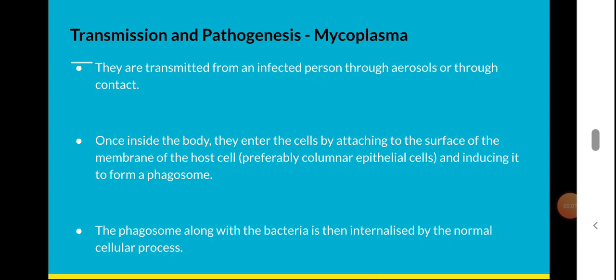In this session we will discuss the transmission and pathogenesis of mycoplasma. In the last session we discussed the cellular and structural features of mycoplasma, its taxonomic position, the different species which infect humans, and the infections caused by mycoplasma — including pneumonia and reproductive infections. Now in this session we will focus on transmission and pathogenesis.